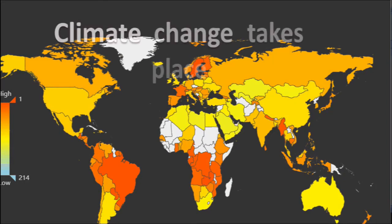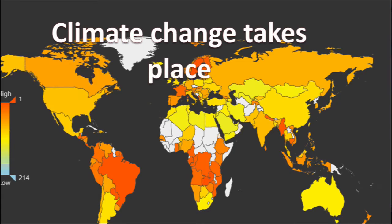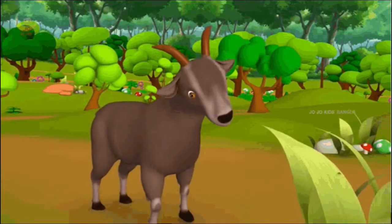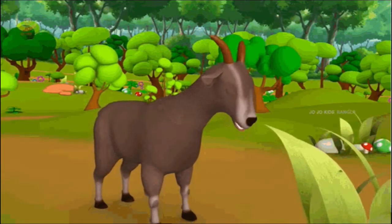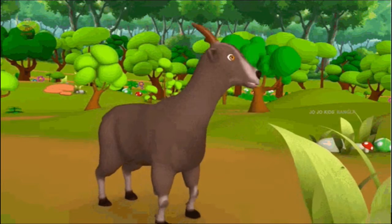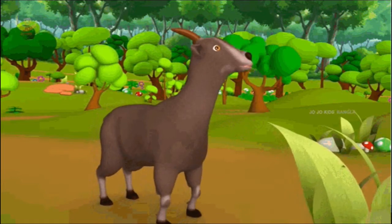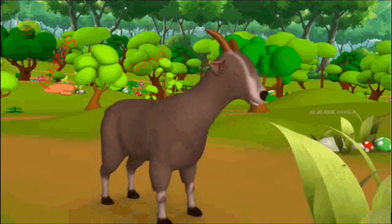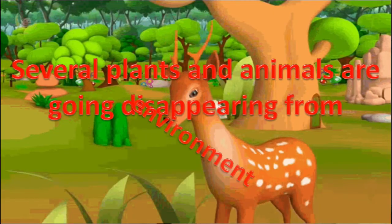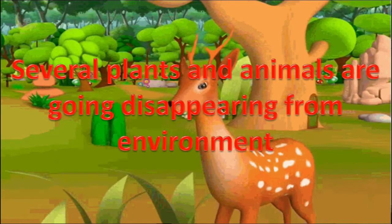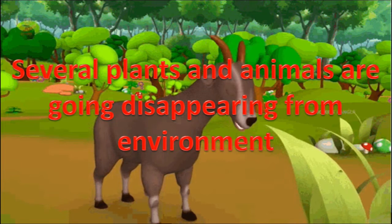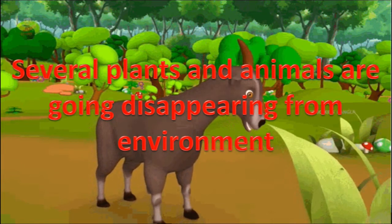Climate change takes place. It is difficult for various creatures to survive in a changing climate. Several plants and animals are going elsewhere and disappearing from the environment due to the greenhouse effect.